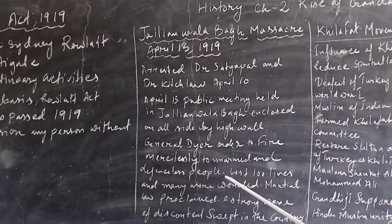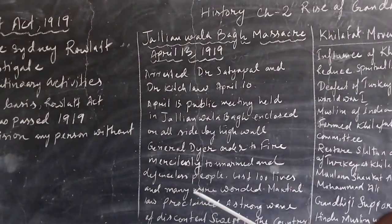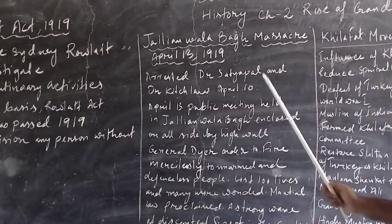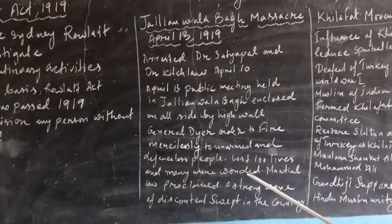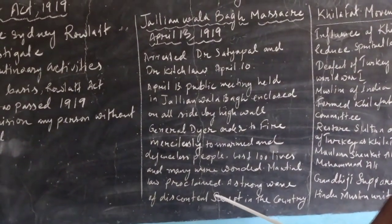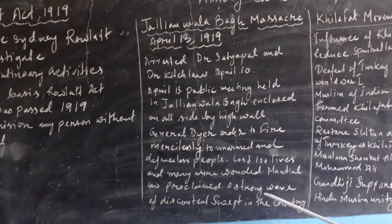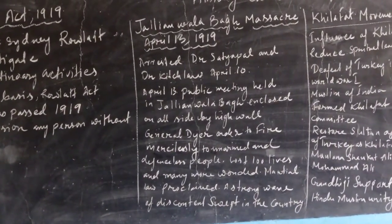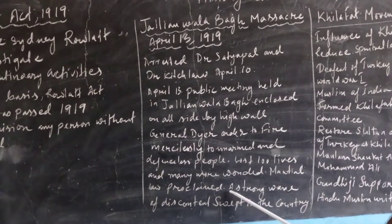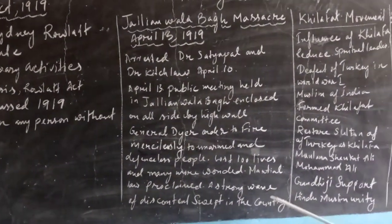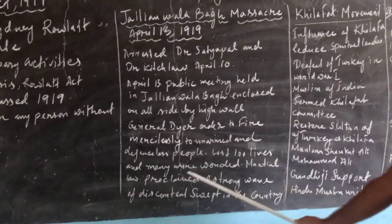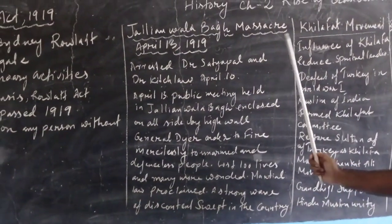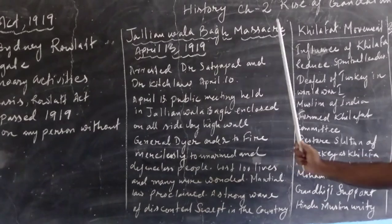Then what happened? Hundreds of lives were lost and many more were wounded. This was the Jallianwala Bagh incident, and it proclaimed a strong wave of discontent throughout the country. Martial law was proclaimed after this tragic incident of the Jallianwala Bagh massacre.